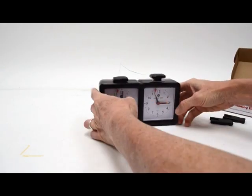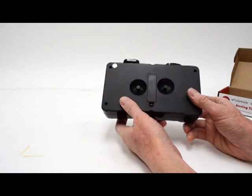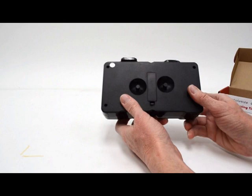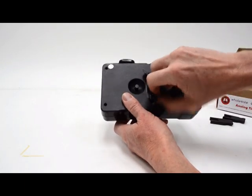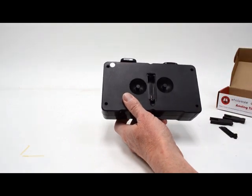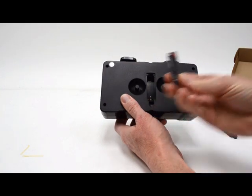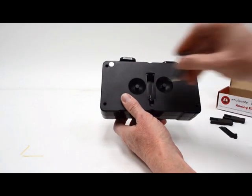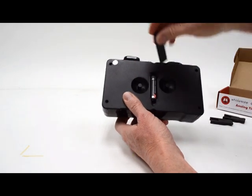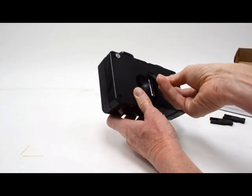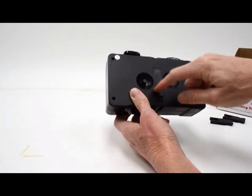If we turn the clock around to the back of the clock, you'll see we have a battery cover. Now this is an analog clock, but it's not wound. We use a battery. That helps prevent the clock from being overwhelmed and damaging the internal components. So, you'll need to install one AA battery, which is not included. Then replace the back of the battery cover.